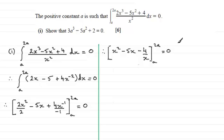So just need to put in when x equals 2a and subtract what we get when x equals a. So if we put 2a in first of all, let's just have some brackets again. We've got 2a all squared. And then we've got minus 5 times 2a minus 4 divided by 2a.